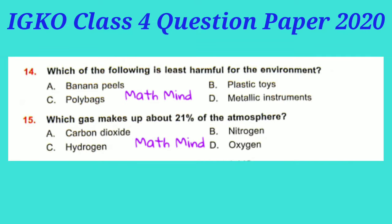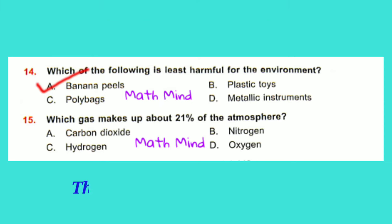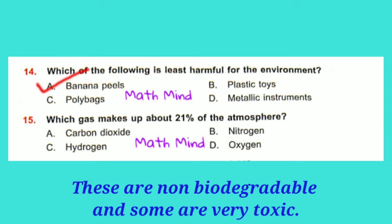Question No. 14: Which of the following is least harmful for the environment? Option A is correct: Banana peels. Option B is Plastic toys, Option C is Poly bags, and Option D is Metallic instruments — these are non-biodegradable. Plastic, metal, and glass are non-biodegradable and some are very toxic.